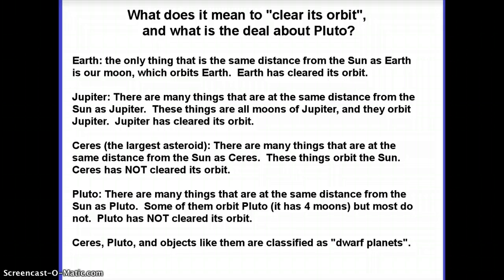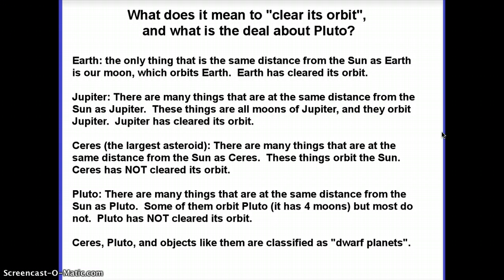Pluto — the one we're really interested in — has lots of things at the same distance from the sun, mostly comets. A few of them orbit Pluto (Pluto has four moons), but thousands of other comets out there at the same distance are orbiting the sun, not Pluto. So Pluto has not cleared its orbit — it's like Ceres. People would say Pluto is much more like a comet than a planet. Things like Ceres and Pluto that orbit the sun, are big enough to be round, but haven't cleared their orbits, are called dwarf planets.